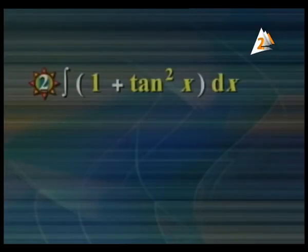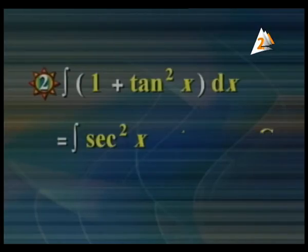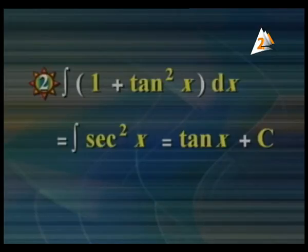Number (2): integration of (1 plus tan²x) dx. Using the identity 1 plus tan²x equals sec²x, this becomes integration of sec²x dx, which equals tan x plus c.